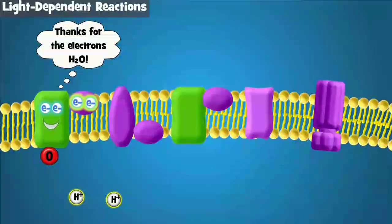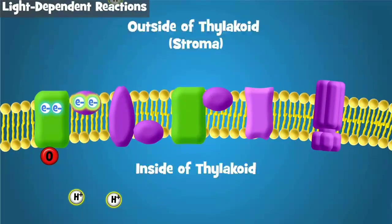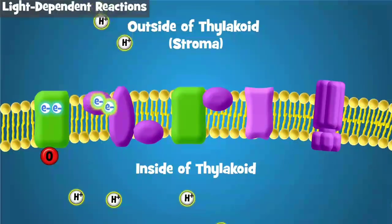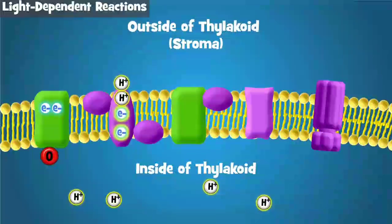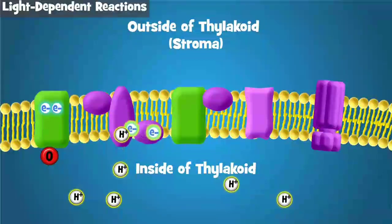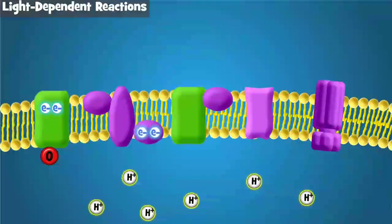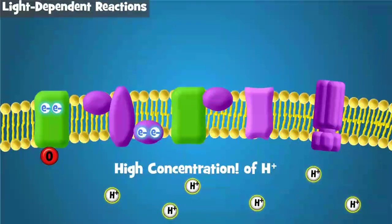Now back to the electron transport chain. The electron transport chain transports electrons. As it does, the energy in the electrons is used to pump hydrogen ions, or protons, across the thylakoid membrane, into the thylakoid. This creates a high concentration of hydrogen ions inside the thylakoid.